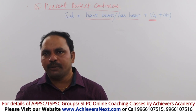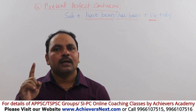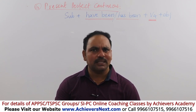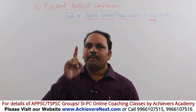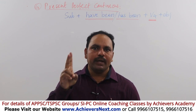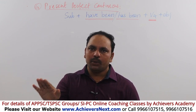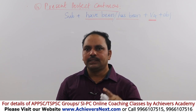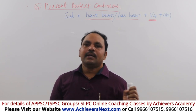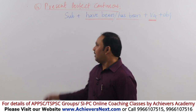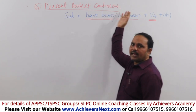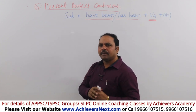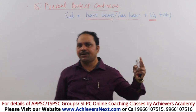V4 is the -ing form. Before that, have been or has been comes. Have is used with I, we, you, they (plural subjects), and has is used with he, she, it (singular subjects). So the verb form we use in this tense is: subject + have been / has been + V4. This is used in present perfect continuous tense.